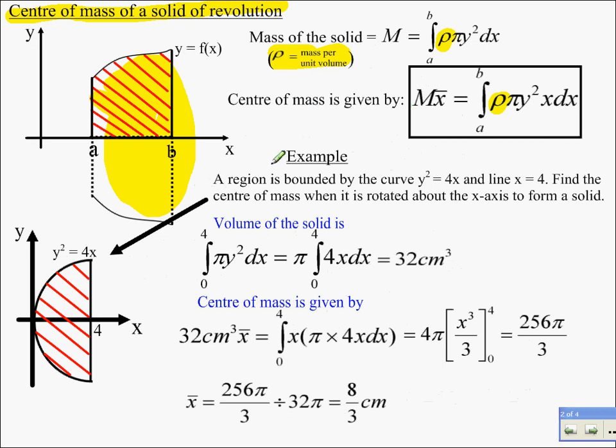Let's have a look at the formula. Getting ahead of myself. The formula for the center of mass is m x bar, so the integral between the two limits a and b of pi y squared x dx. So that's y squared x dx. Let's have a little look at an example.